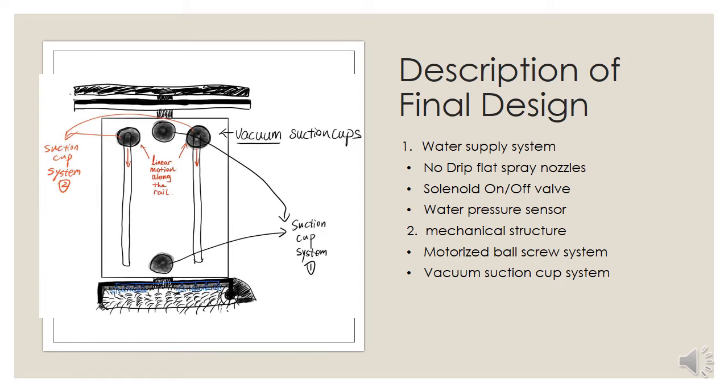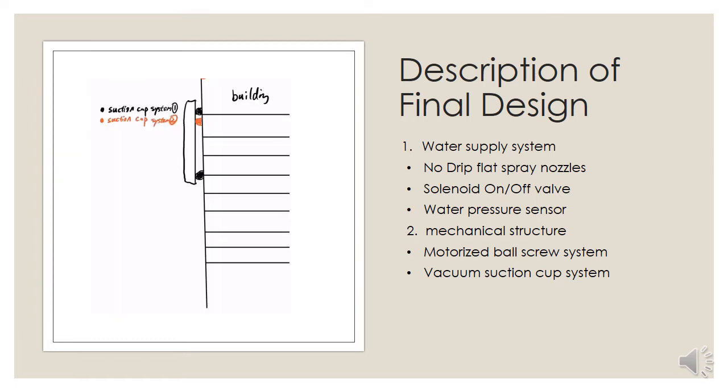When it reaches the bottom, the system 2 adheres on the surface again. Then the suction cup system 1 on the main body releases from the surface. After that, the main body begins to move down vertically. While the body moves, all clean components start to work and the system 2 moves back to the top of the body as well. Finally, the system 1 adheres on the surface again. The specific movement process is shown in this video.